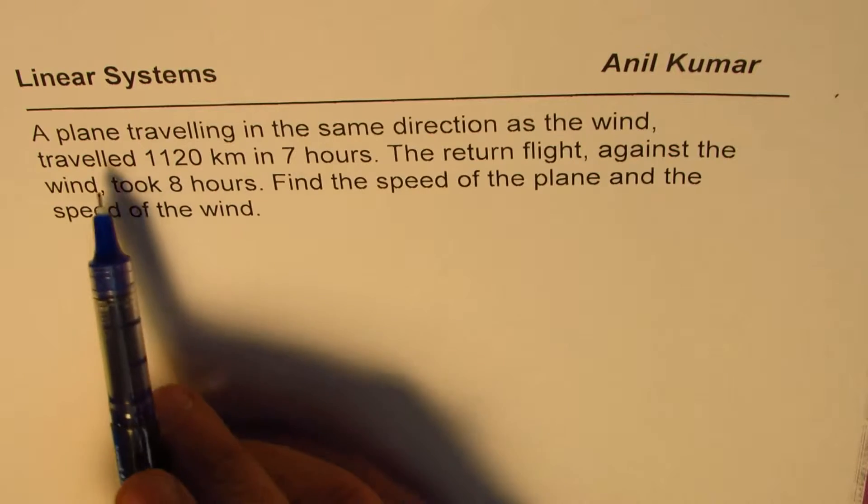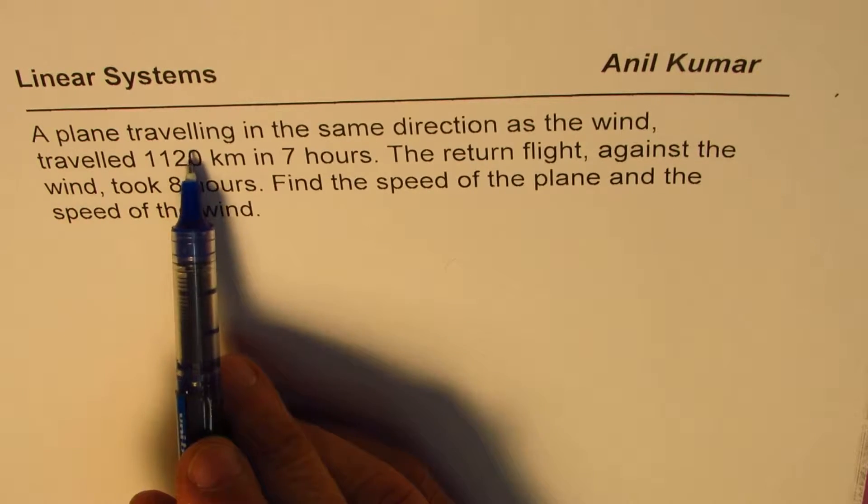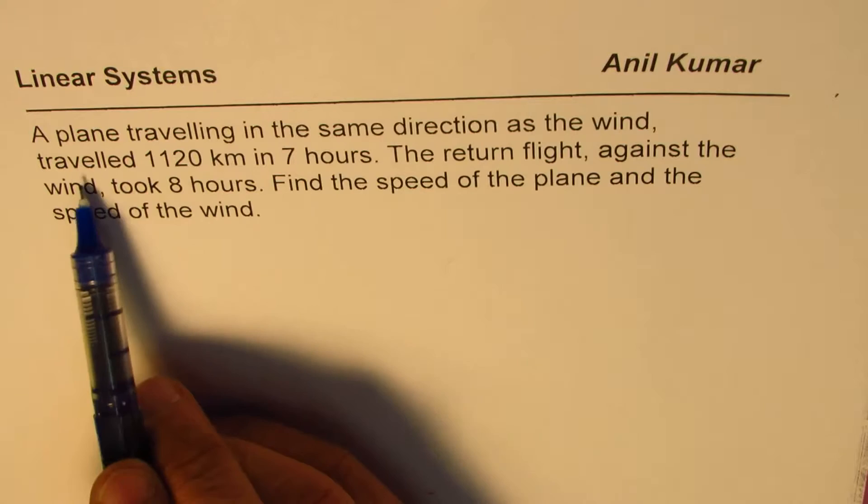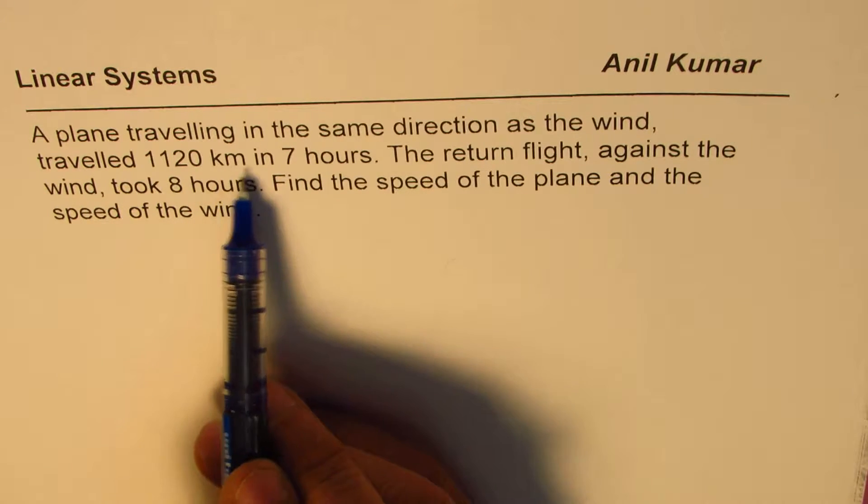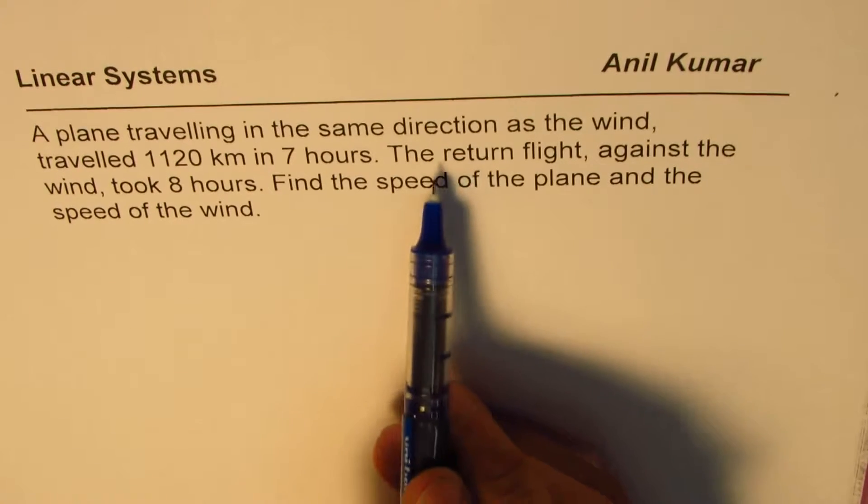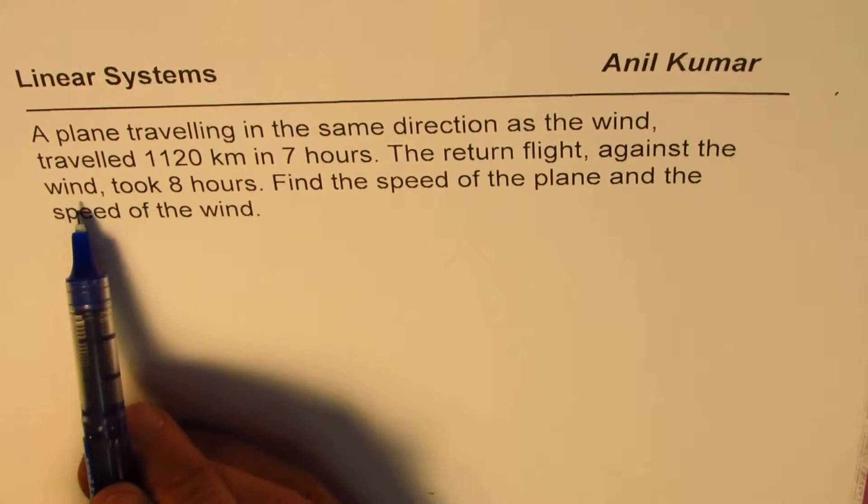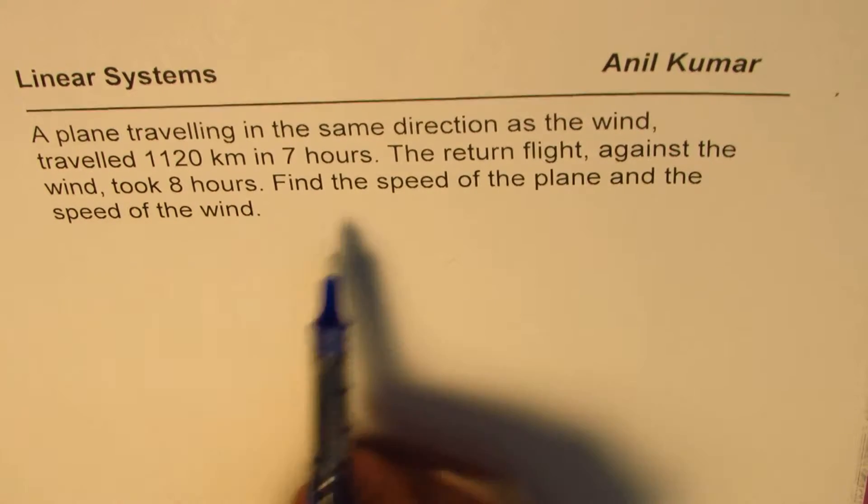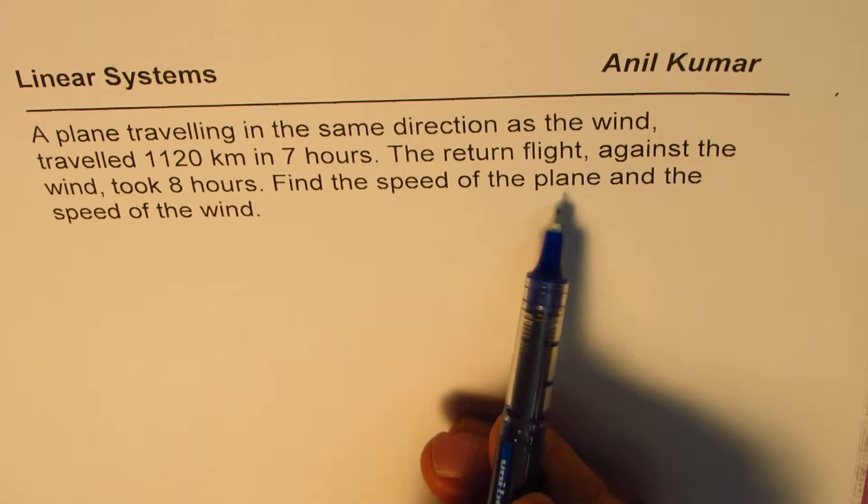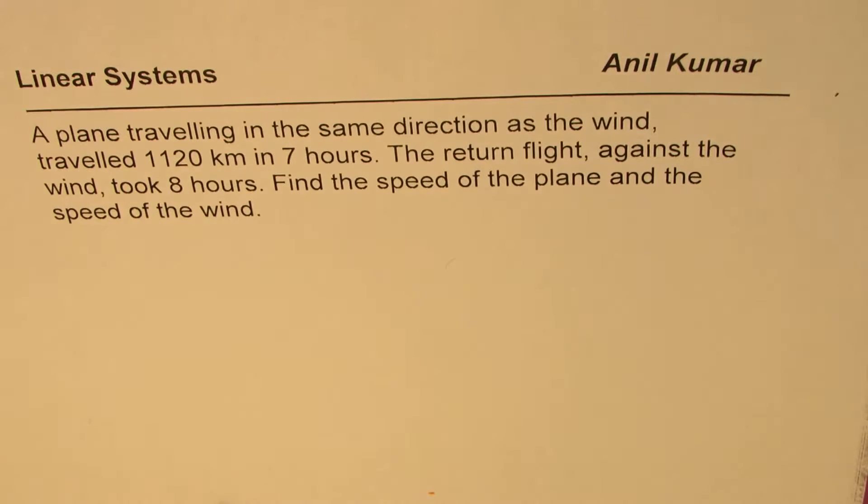The question here is, a plane traveling in the same direction as the wind traveled 1120 kilometers in 7 hours. The return flight against the wind took 8 hours. Find the speed of plane and the speed of wind. You can always pause the video, answer the question and then look into my suggestion.